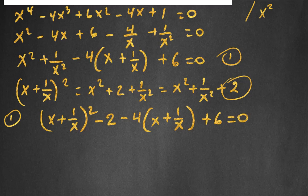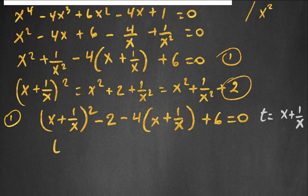We can designate x plus 1 over x as a new variable t. If I say t is equal to x plus 1 over x and plug in t's, the equation becomes t squared minus 2 minus 4t plus 6 equals 0.